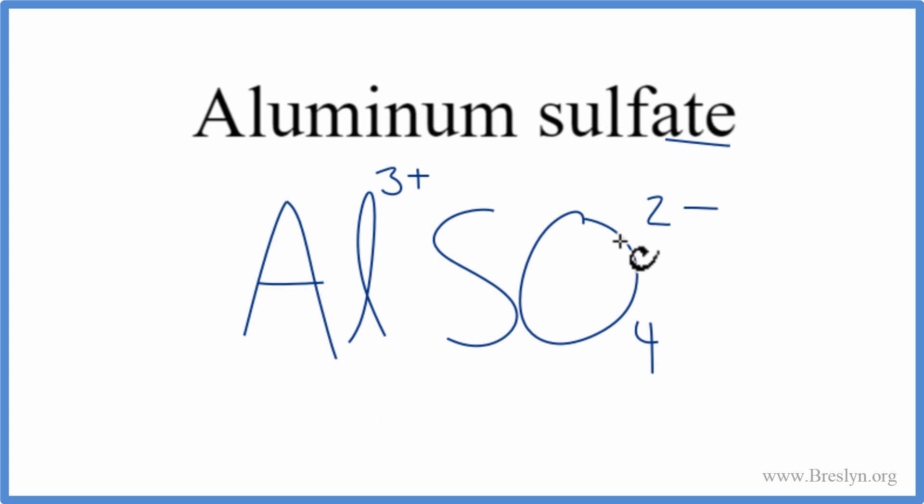So right now, they don't add up to zero, but we can use something called the crisscross method to make that happen. We can move the 2 over here, and the 3 out here.